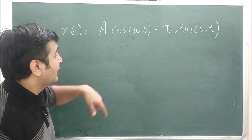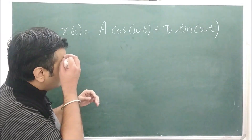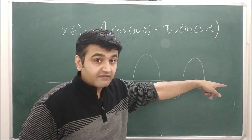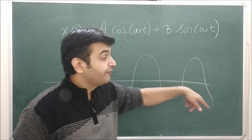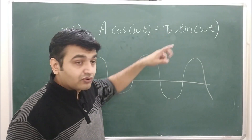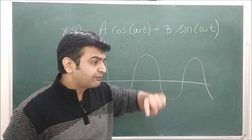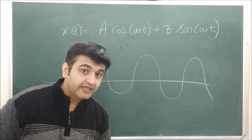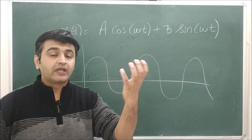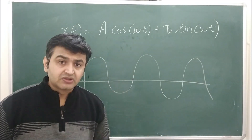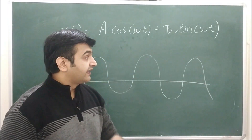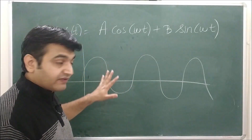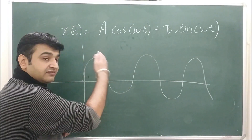As you can see, if we sketch the graph of this solution, as t goes to infinity both sine and cosine are oscillatory functions — they keep oscillating and never stop. This is exactly what the undamped system means: when you pull and release the mass, with no damping in the medium, it keeps oscillating up and down forever, which is confirmed by the solution.